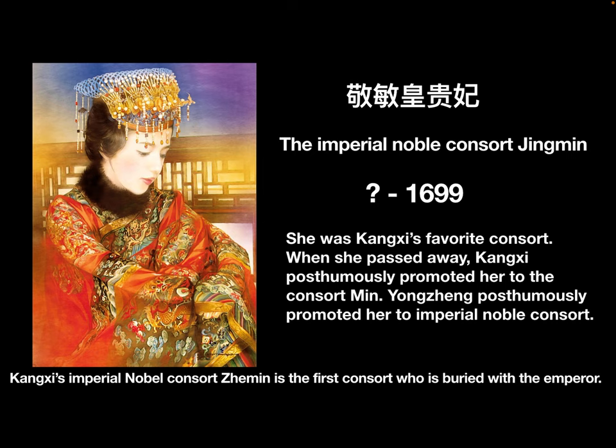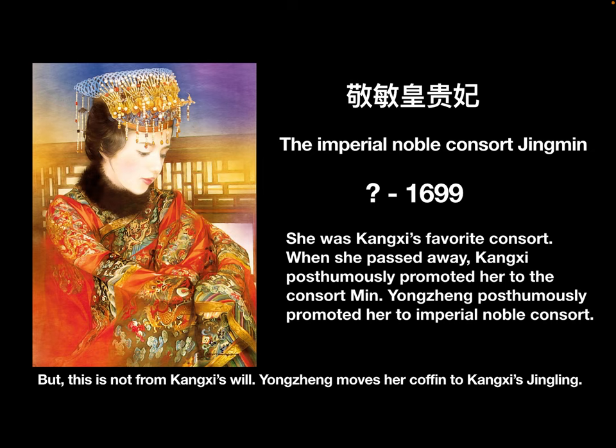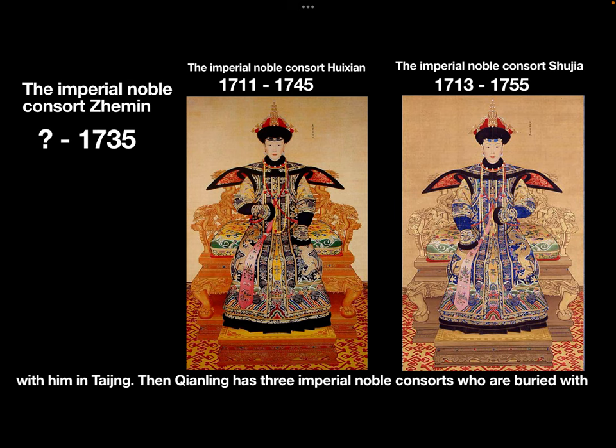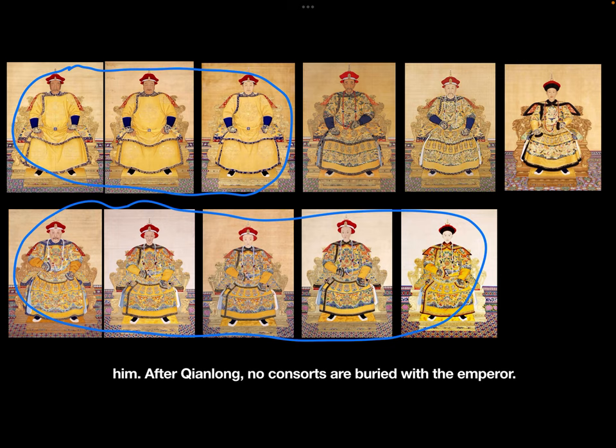In the Qing dynasty, before Yongzheng, no consorts were allowed to be buried with the emperor. Kangxi's imperial noble consort Zhe Min was the first consort buried with the emperor, but this was not from Kangxi's will — Yongzheng moved her coffin to Kangxi's Jing Lin. When Yongzheng passed away, his favored imperial noble consort Dun Su was buried with him in Tai Lin. Then Qianlong had three imperial noble consorts buried with him. After Qianlong, no consorts were buried with the emperor.